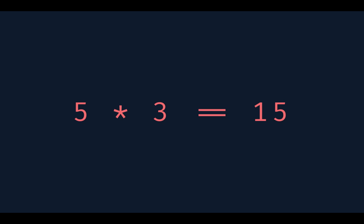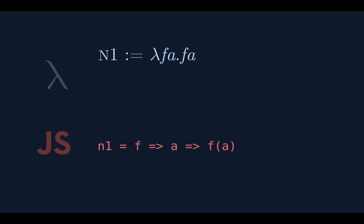We left off — I was going to teach you numbers. We don't have multiplication, we don't have equality, we don't have numbers — we've got nothing. So instead of nouns like one, two, and three, we're going to use adverbs: once, twice, thrice, and so on.